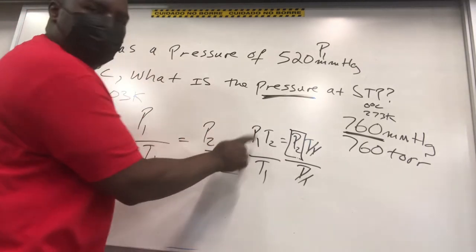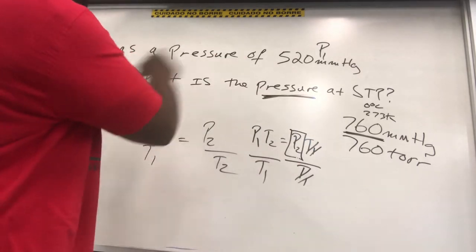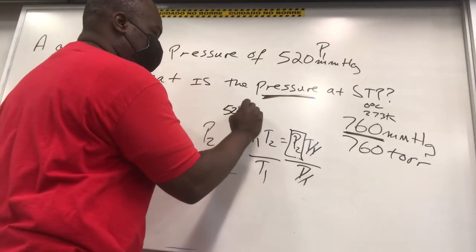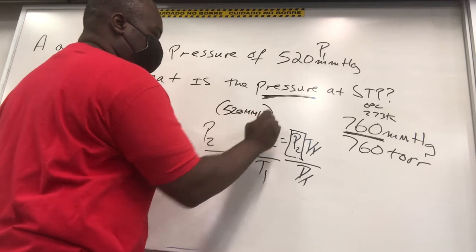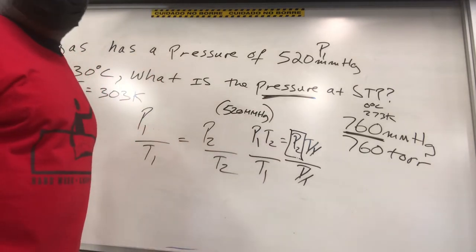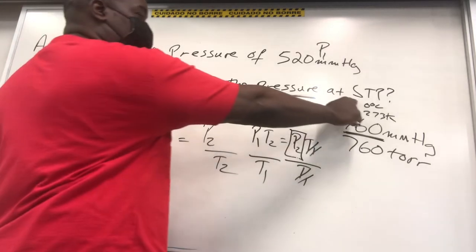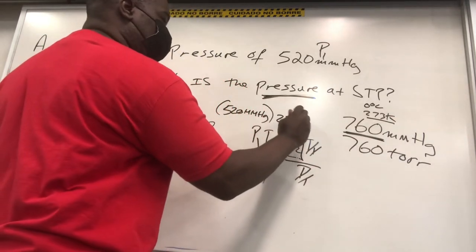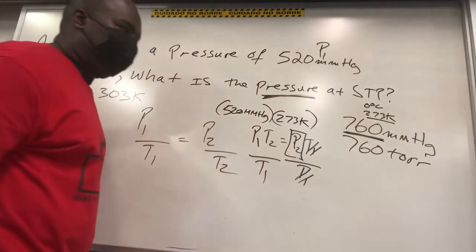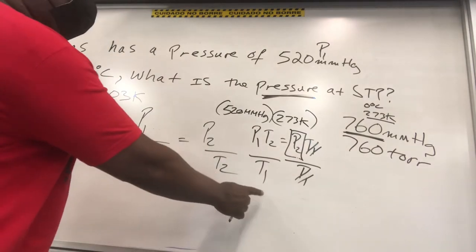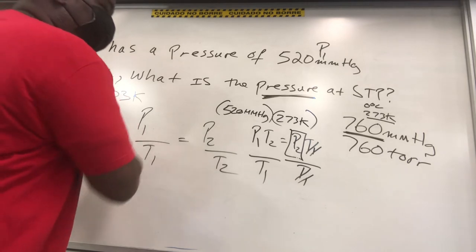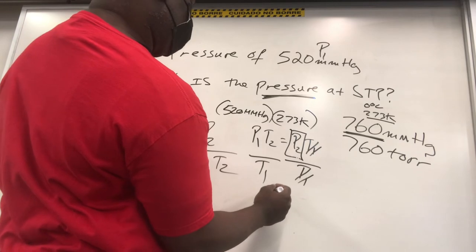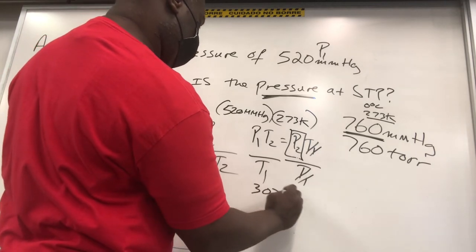What's our pressure one? What's our starting pressure? Look at our problem carefully. Our pressure one is 520 mmHg, 520 mmHg there. Take a breath. What's our T2? Our T2 now is from the STP information over here. We're going to use 273 Kelvin. So 273 Kelvin goes there. Take a breath. What's our T1 initial temperature? Initial temperature is 303. So 303 goes in the bottom. 303 Kelvin goes in the bottom.